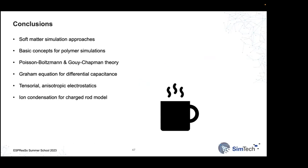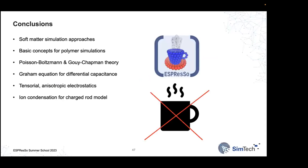To summarize: we covered soft matter simulation approaches, basic concepts of coarse graining, polymer simulations, Poisson-Boltzmann theory, derivation of differential capacitance, why interfacial electrostatics matters, and ion condensation. Time for coffee — and questions if you have them.